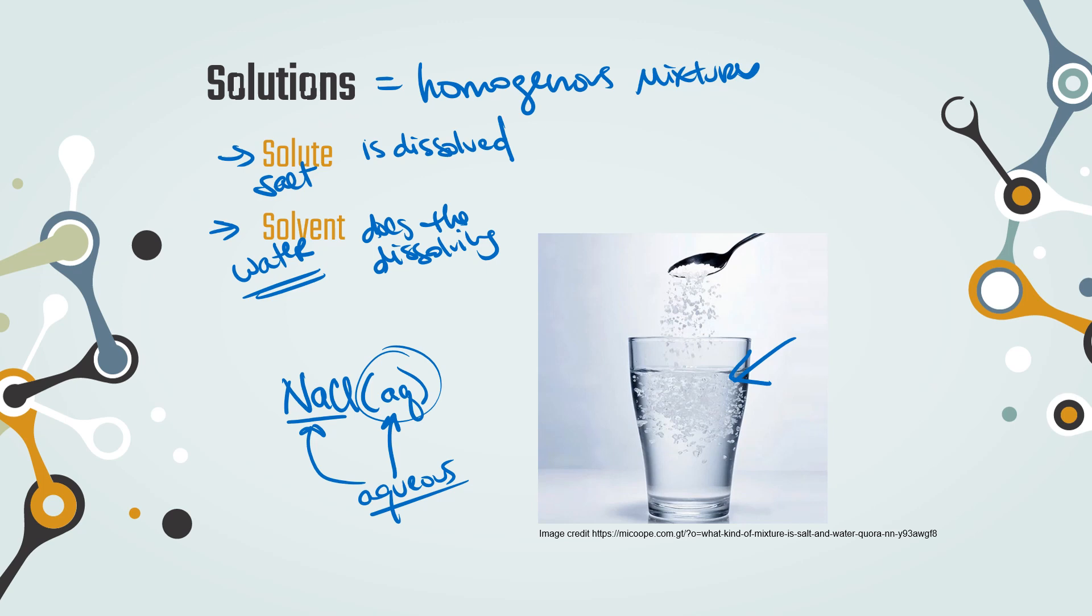Kind of cool. Another solution that's really common in the world is the air that we breathe. And the solvent is actually nitrogen gas. Nitrogen gas is the most abundant of the gases in the air that we breathe here on earth. The solutes are all the other gases that are dissolved in that nitrogen. So oxygen and carbon dioxide, probably some really bad stuff like probably some ozone, maybe some carbon monoxide, some nitrogen dioxide.